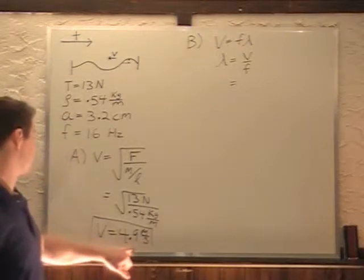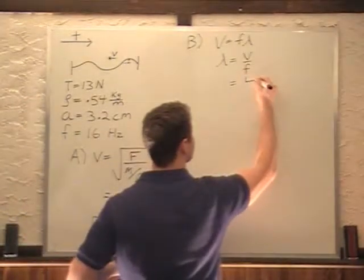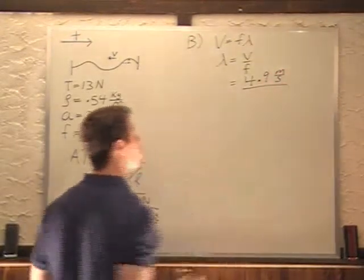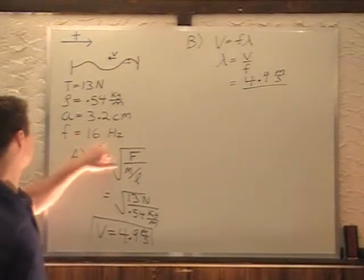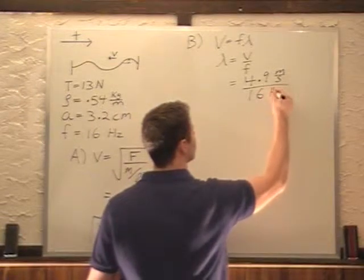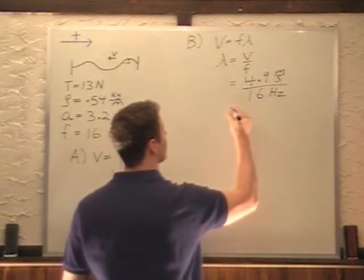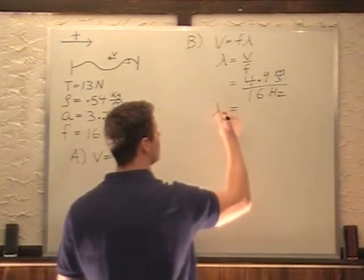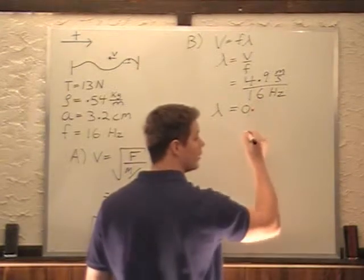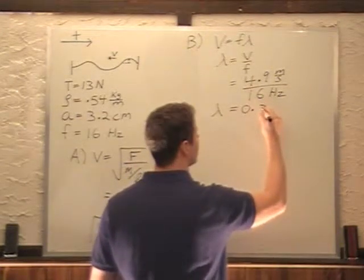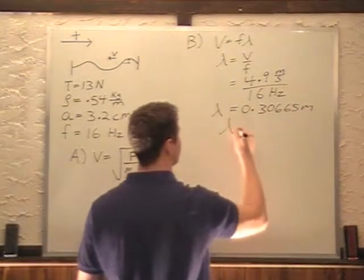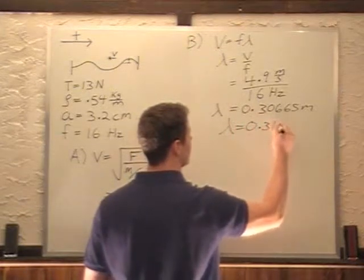So if you kept this in your calculator with all the significant digits, you can write that, keep that in, just divide by F. 4.9 meters per second divided by a frequency of 16 hertz. 1 over second cancels 1 over second, leaving our wavelength in meters of 0.30665 meters. Rounding for my final answer is 0.31 meters.